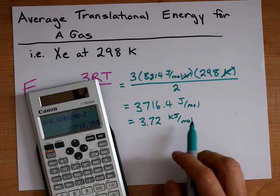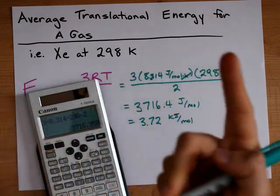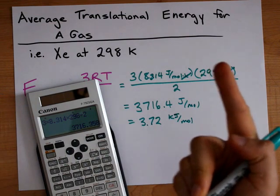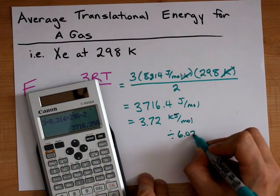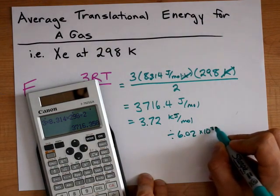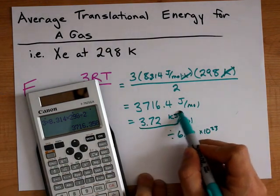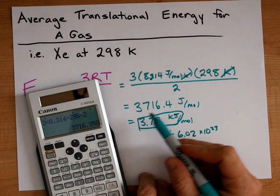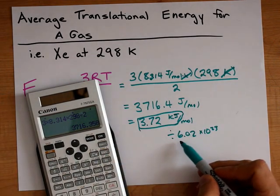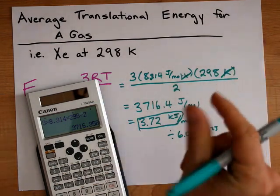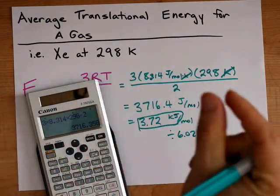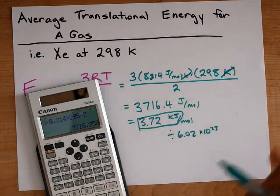If you were asked for how much translational energy a single molecule has, what you'll end up doing is dividing this by Avogadro's number because this is the number of kilojoules for a mole of the atom or molecule, and you have to divide it into 6.02 trillion trillion trillion pieces to figure out how much energy each atom or molecule actually has.